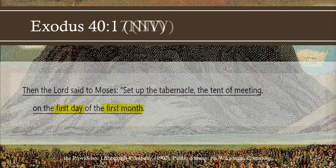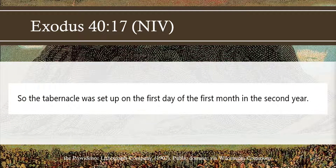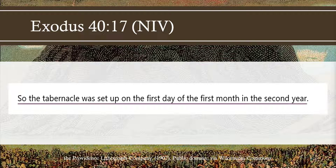Exodus 40, verse 17: the tabernacle was set up on the first day of the month in the second year. It's a new year. There's a renewal. It's out with the old, in with the new — Father Time is dying, Baby New Year is here. The sins of our past have been forgiven, and now we are in a new year. It's a new creation. We're born again. It's a fresh start with God. And so it's a great picture at the end of Exodus as God is now going to march into the future with the Israelites.